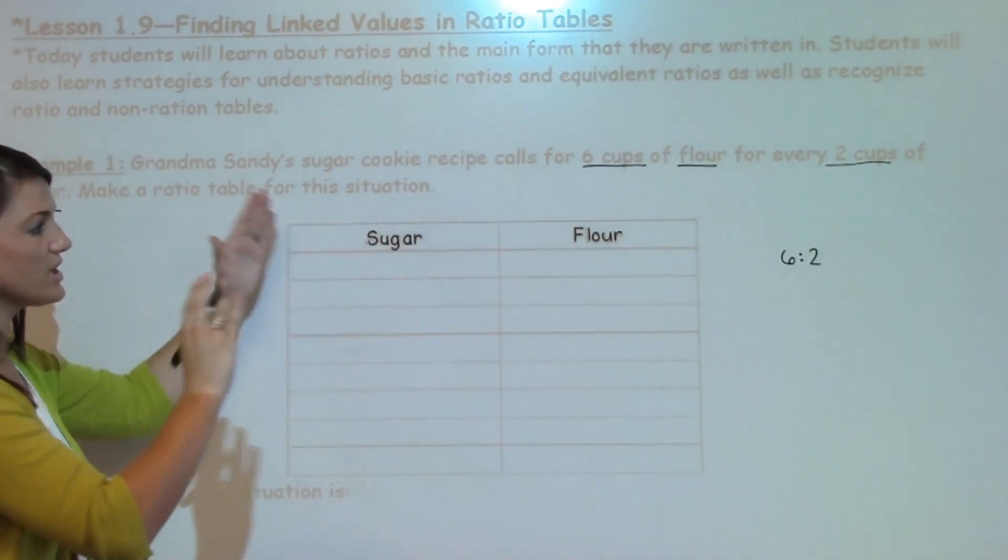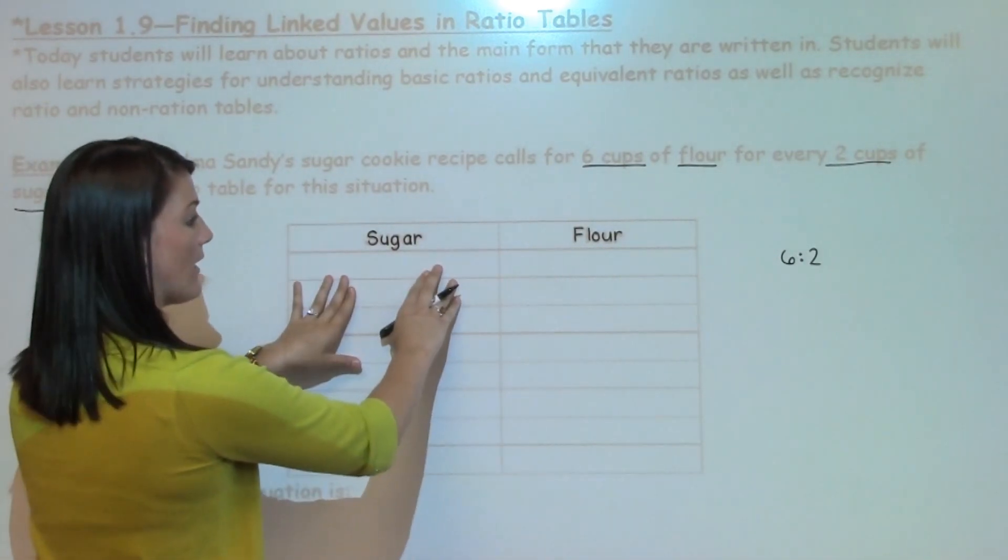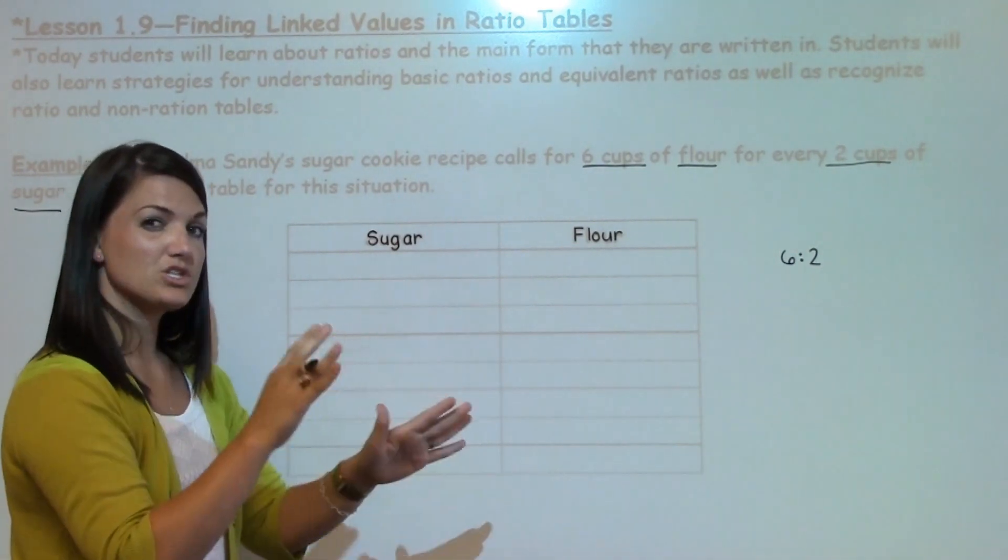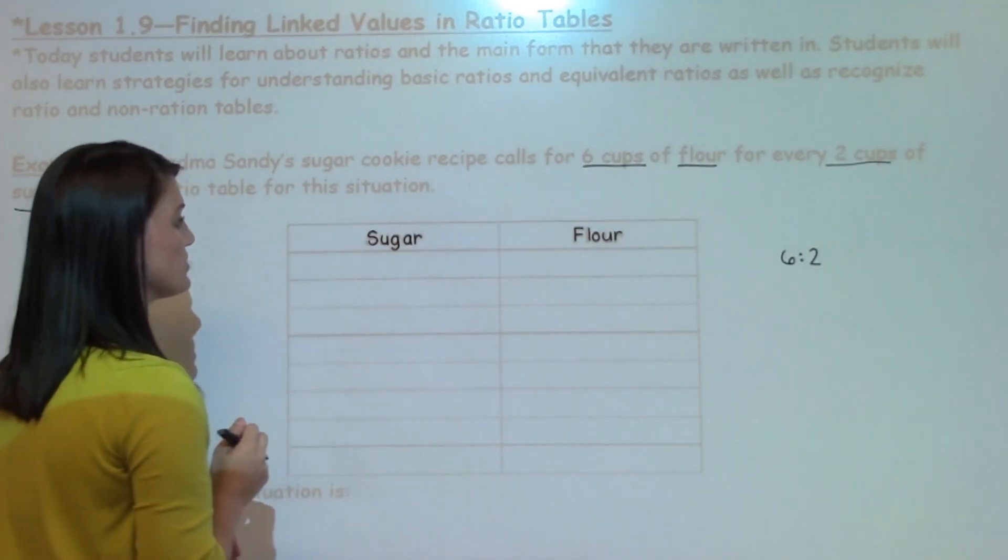I know that my basic ratio is 6 cups of flour to 2 cups of sugar. I have it flip-flopped here in my table. We could show it either way with flour going first and sugar going second, or we can show it sugar and flour. The ratio is the same. You just want to make sure your labels are correct.